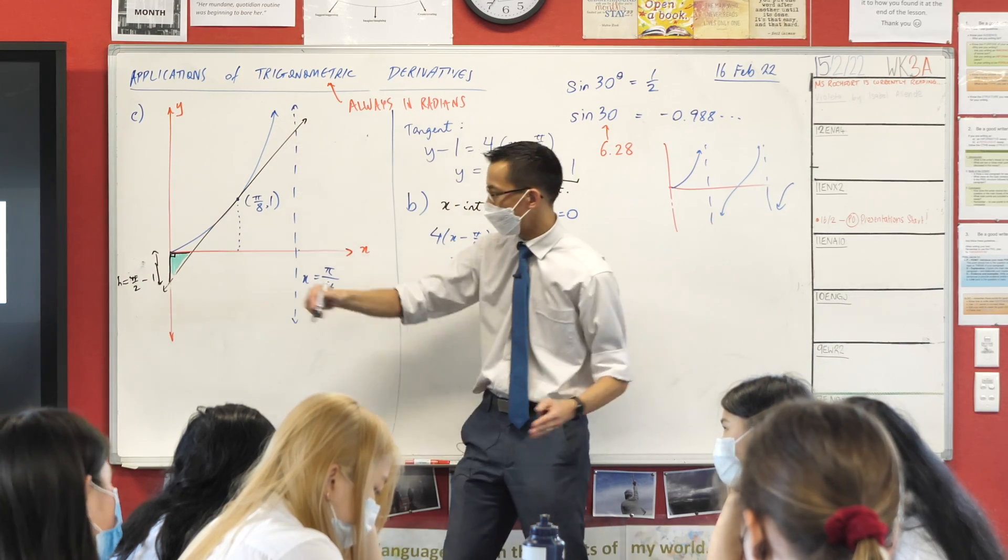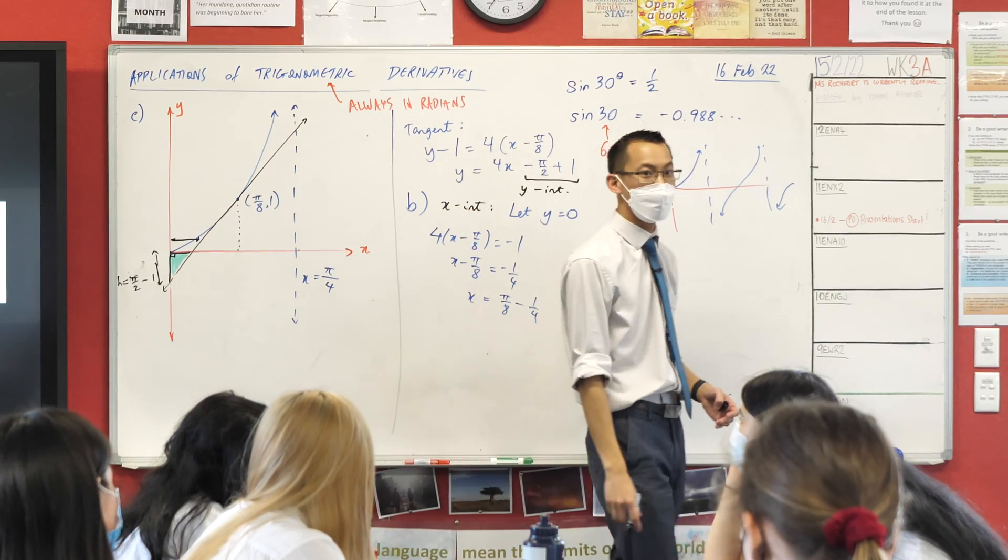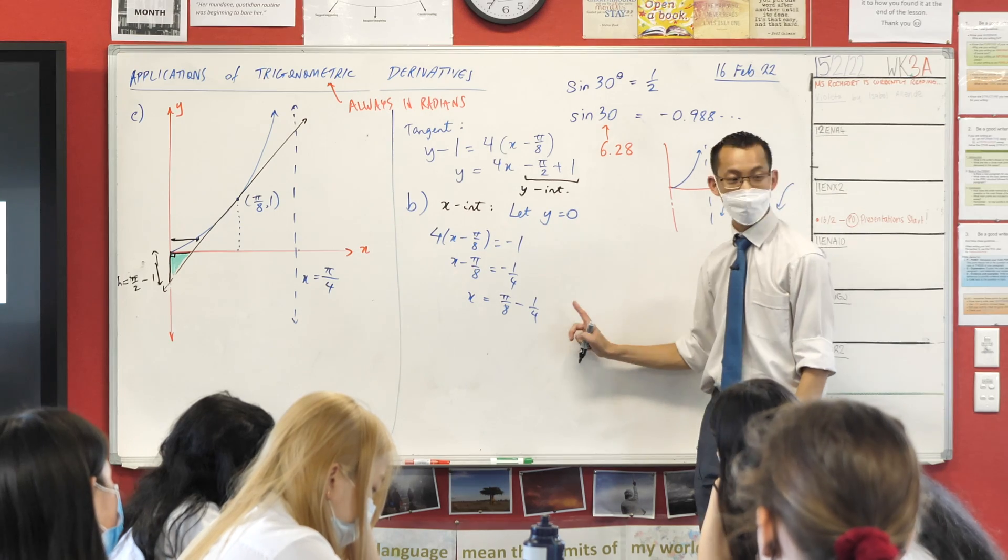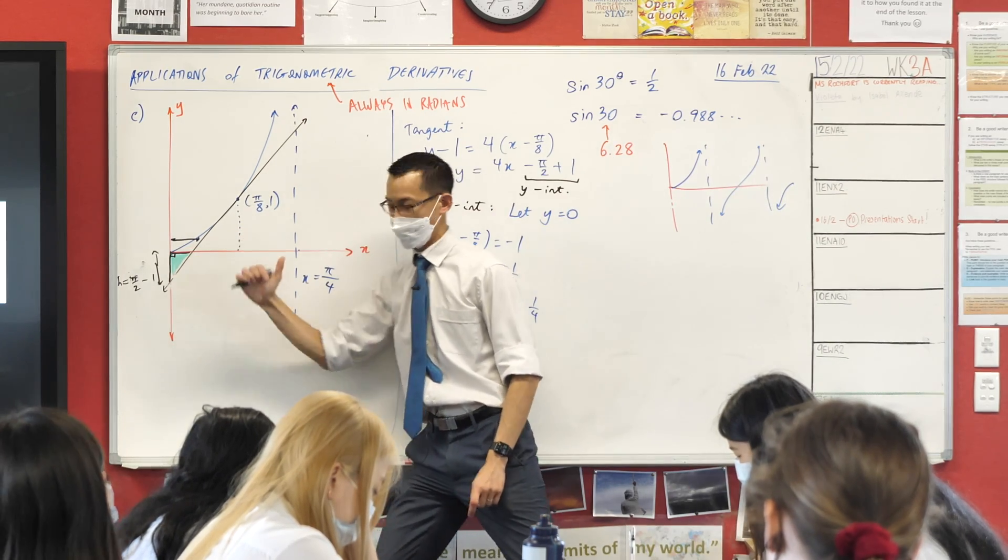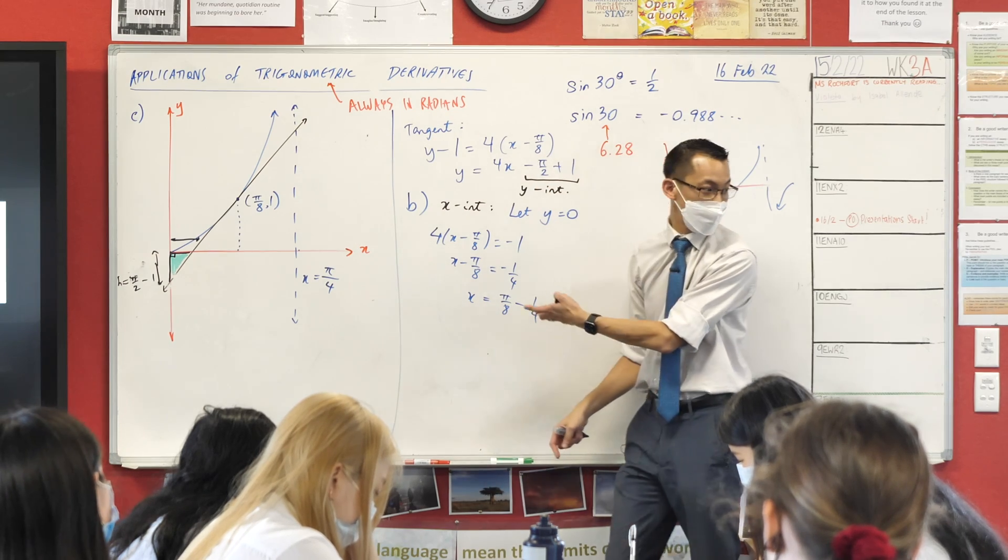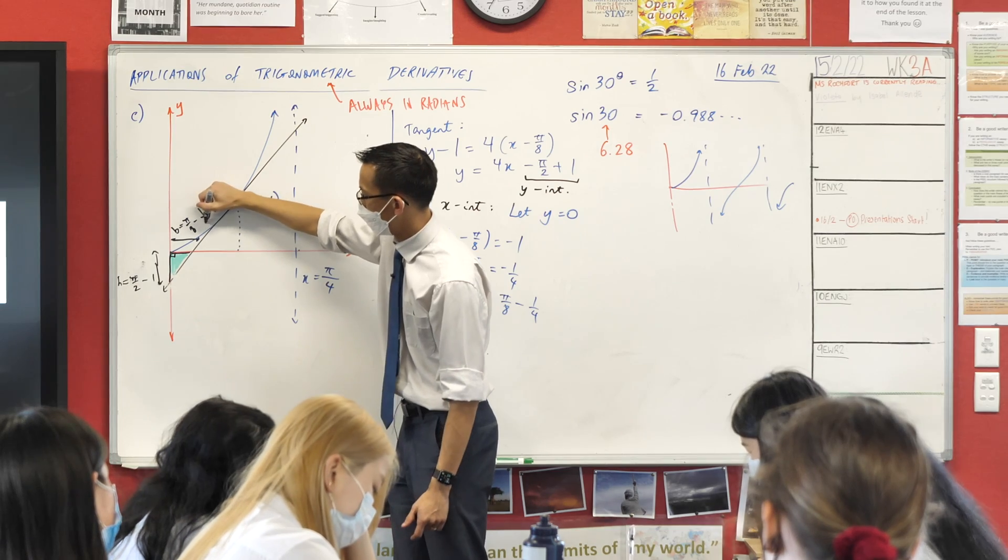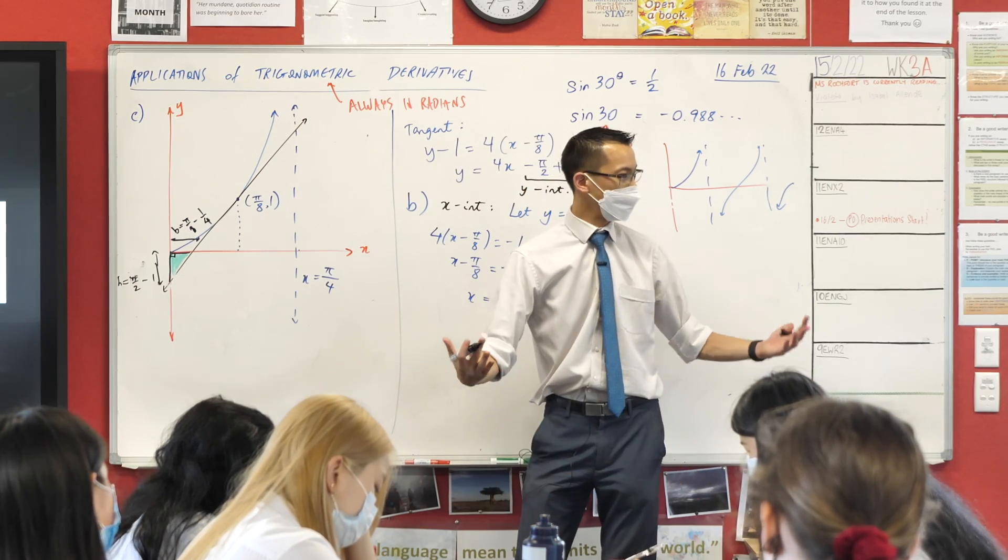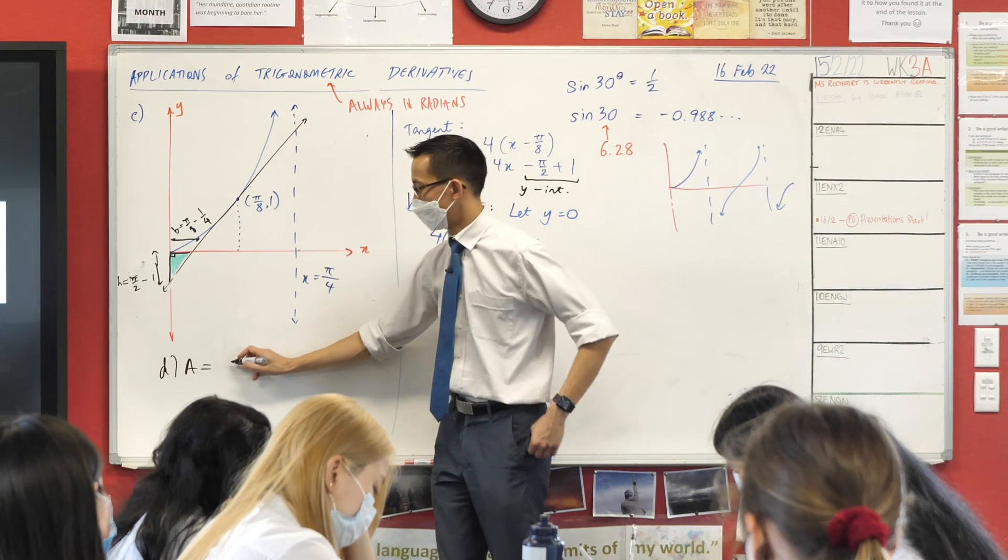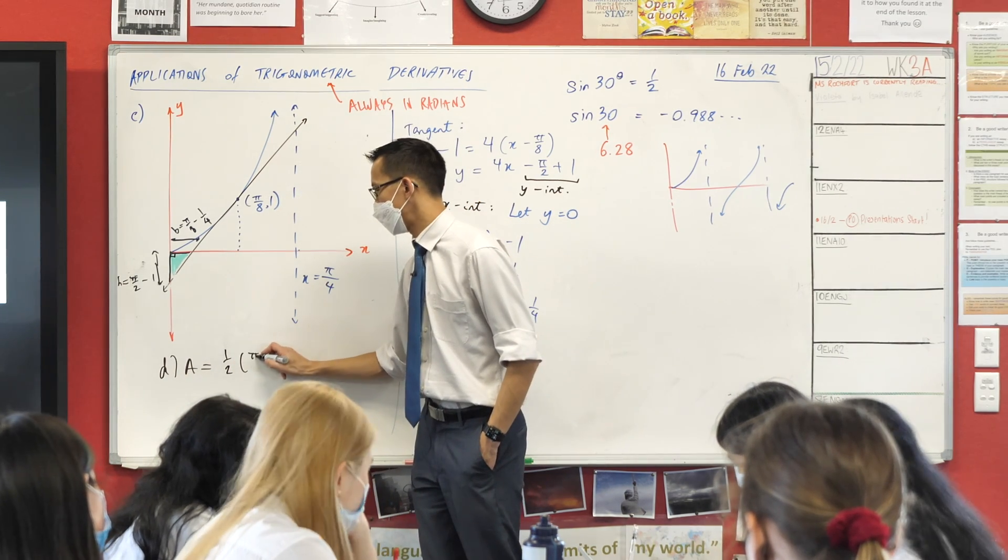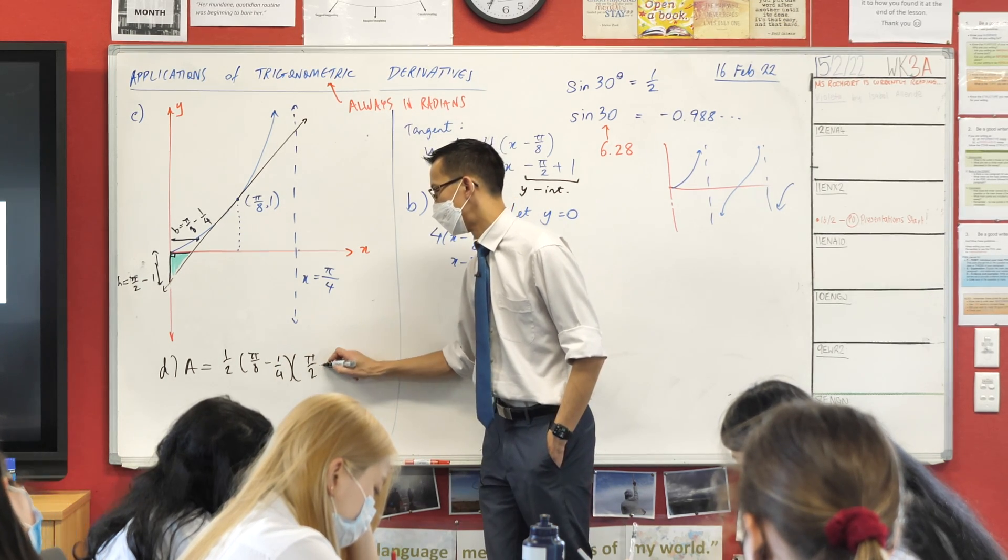And then I need the base, which I guess would be this here roughly. Where's that from? Yeah, it's from the x-intercept. Now luckily for us, this is already positive because you can see it's over here on the positive side. So π on 8 minus 1 quarter, that's the base. π on 8 take away 1 quarter. So all I need to do is go half base times height. This is part D. Area equals half, π on 8 minus 1 quarter, times π on 2 minus 1.